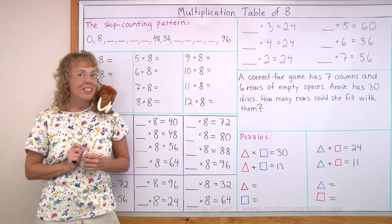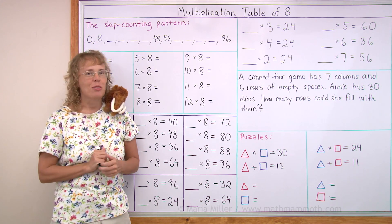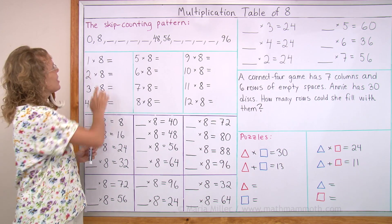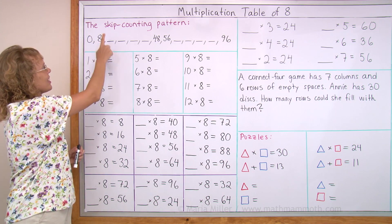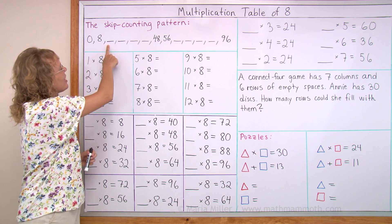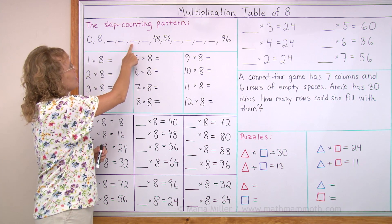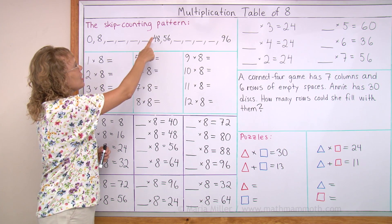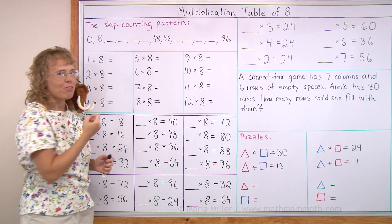But let's first look at the skip counting pattern, as usual. It goes like this: 0, 8, 16, 24, 32, 40, and 48 — to the halfway point.